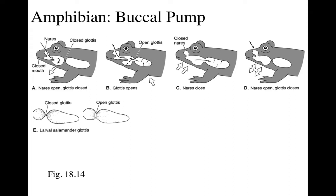Amphibians also have a buccal pump, operating by the same principle. At first the glottis is closed; inspiration with the buccal pump draws air in. Then the glottis opens and air can come out.